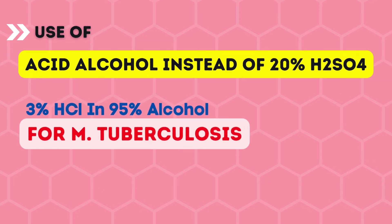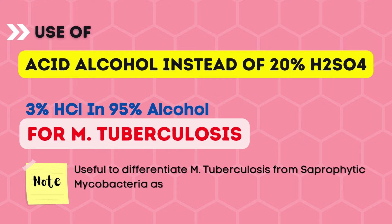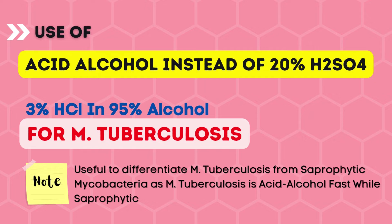The next aspect is the use of acid alcohol instead of 20% H₂SO₄. In the standard method we use 10% H₂SO₄ as a decolorizing agent, but we can also use 3% HCl in 95% alcohol as a decolorizing agent, which is particularly used for Mycobacterium tuberculosis. This is useful to differentiate M. tuberculosis from saprophytic mycobacteria, because M. tuberculosis is not only acid fast but also alcohol fast — it can be called acid-alcohol fast — while saprophytic mycobacteria are acid fast only.